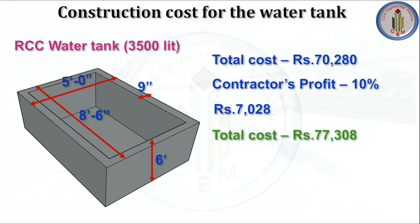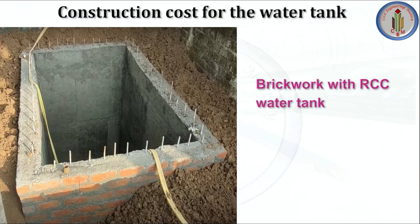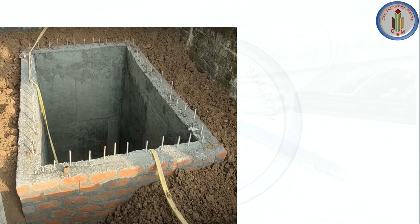From this total cost we can find the cost per liter: total cost divided by capacity gives approximately 22 rupees per liter. Since all material prices have increased, the cost of water tank construction has also increased. Next, let's look at the cost of construction for a brickwork with RCC water tank.